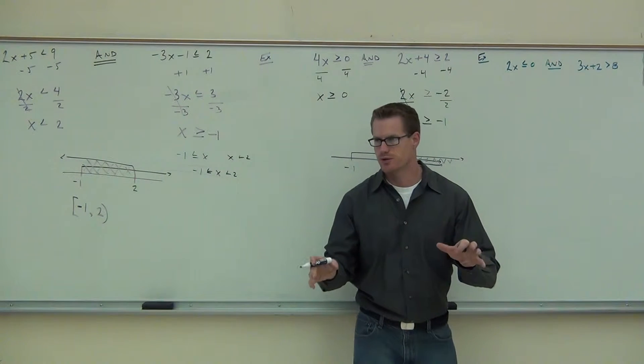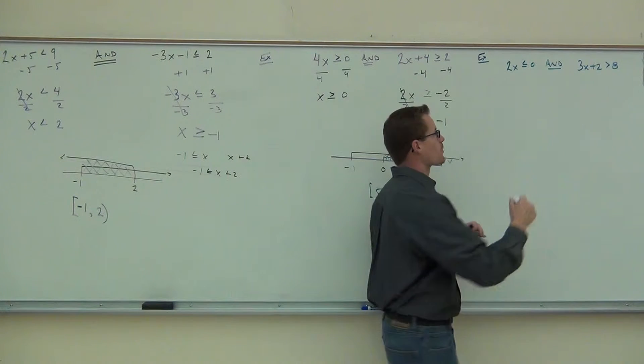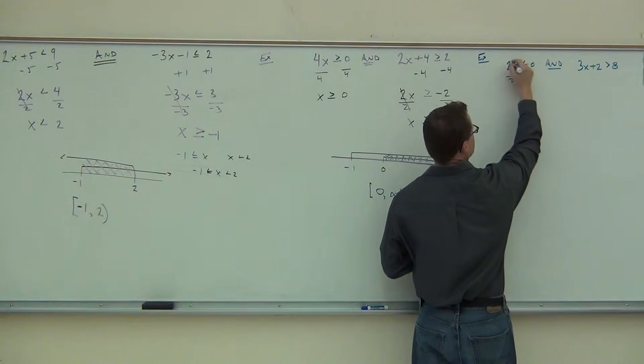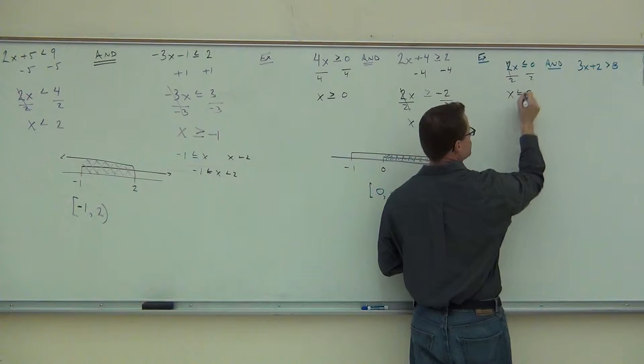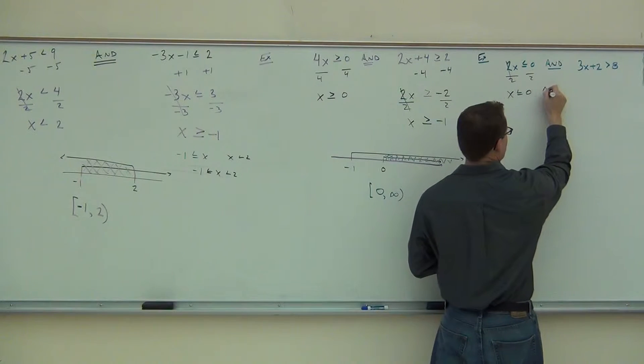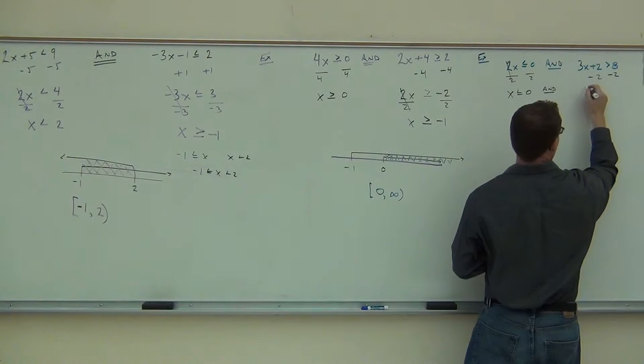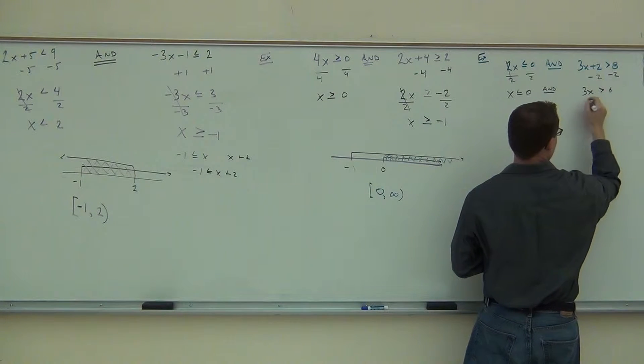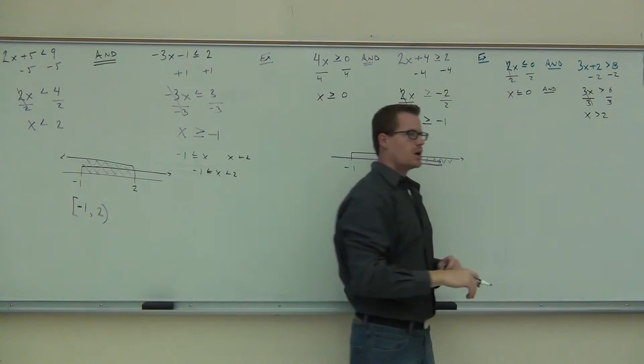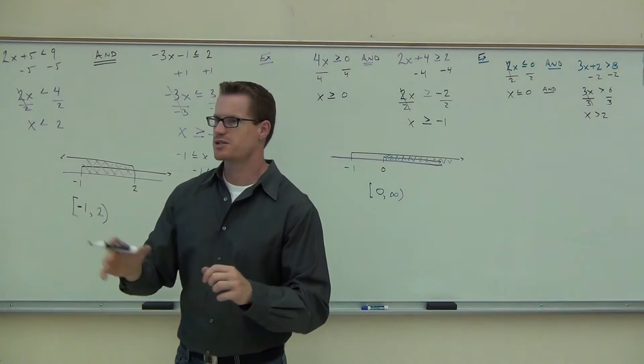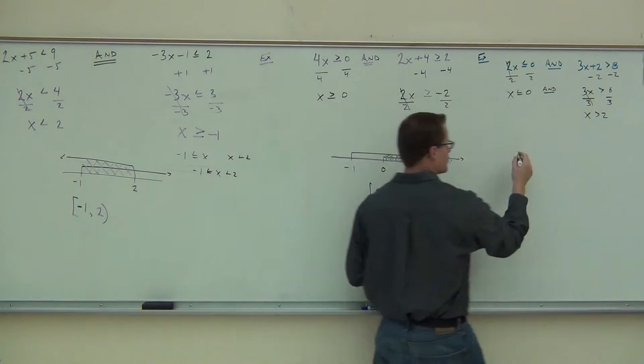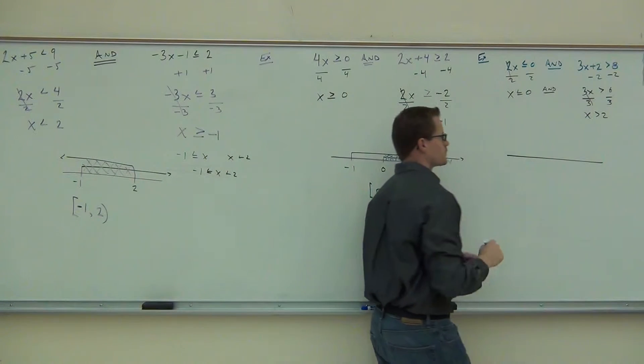We're going to solve these very lightning quick. We'll solve them lightning quick, but I want to talk mostly about the graph. Of course, you're going to divide by 2. Nothing's going to change. You get x is less than or equal to 0. Leave our hand. You subtract 2. You get 3x is greater than 6. You divide by 3. You get x is greater than 2. Those should be no-brainers. We solve those like basic algebra, pre-algebra even. We get those inequalities.